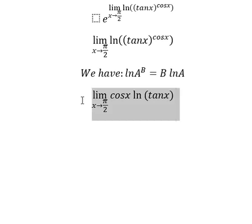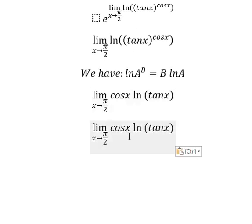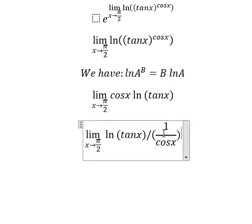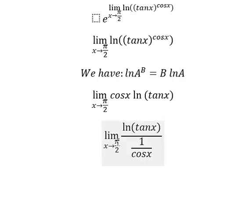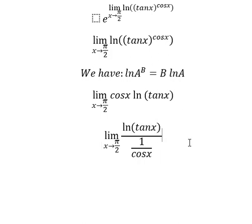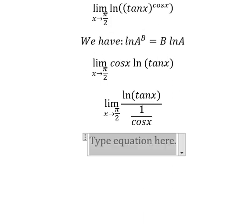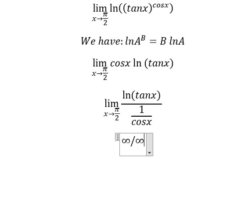Next, we need to transform cosine x into this form. When x approaches π/2, this one gives us zero — one divided by zero gives us infinity. This one gives us negative infinity, so that means we have infinity over infinity.